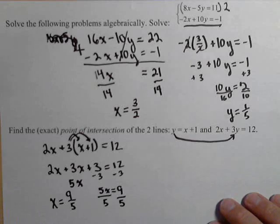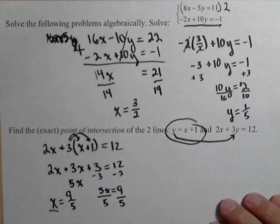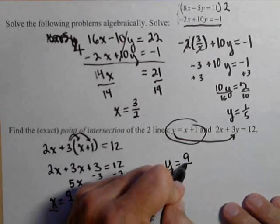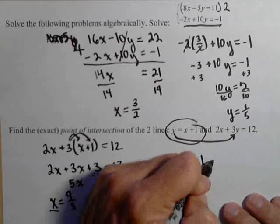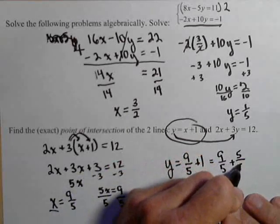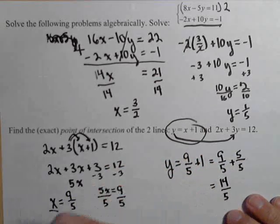Now we have to use this to find y. The one nice thing about substitution is we've already solved for the other variable in terms of x. So we just need to plug that in to our equation. We know y equals x plus one. So y equals nine fifths, what we found for x, plus one. Which is nine fifths plus five fifths or 14 fifths.